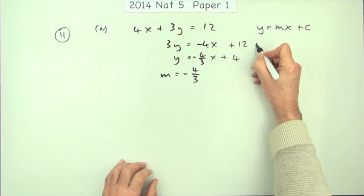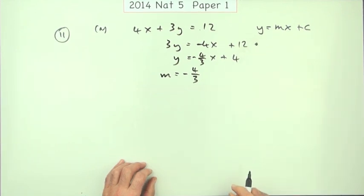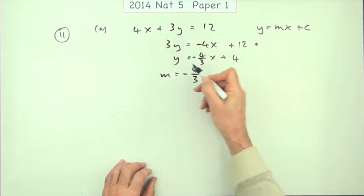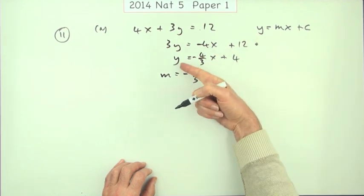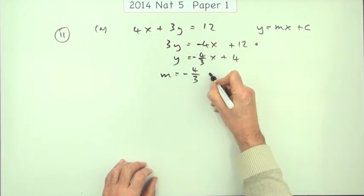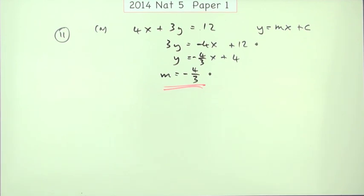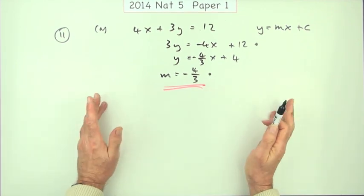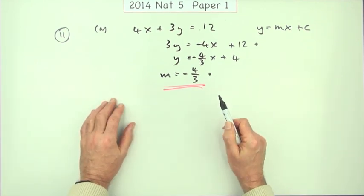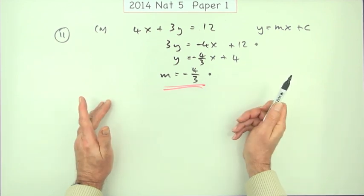The marks here were knowing that you had to rearrange it but not for the full rearrangement. The first mark was just to start it off and then the second mark was to know that you have to divide to get just y on its own and pick out the coefficient. Now this was again one of those questions where you have to be careful. I'd still put working down where if you just stated that you'd have got 2 out of 2.